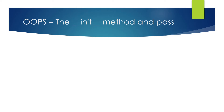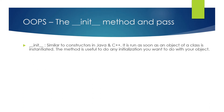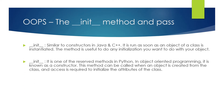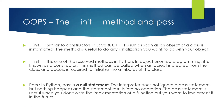Before moving into the demo, there are two things to cover: the __init__ method and 'pass'. The __init__ method is similar to a constructor like we have in Java and C++. It is run as soon as the object of a class is instantiated. The method is useful to do any initialization you want to do with your object. It is a reserved method in Python — in OOP it is known as the constructor — and it is called when an object is created from the class to initialize the attributes.